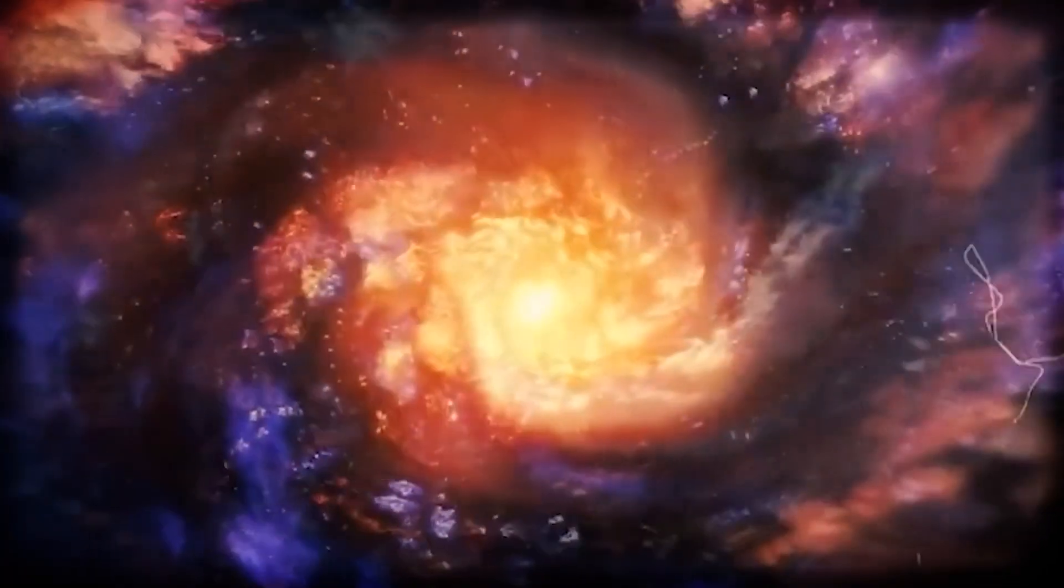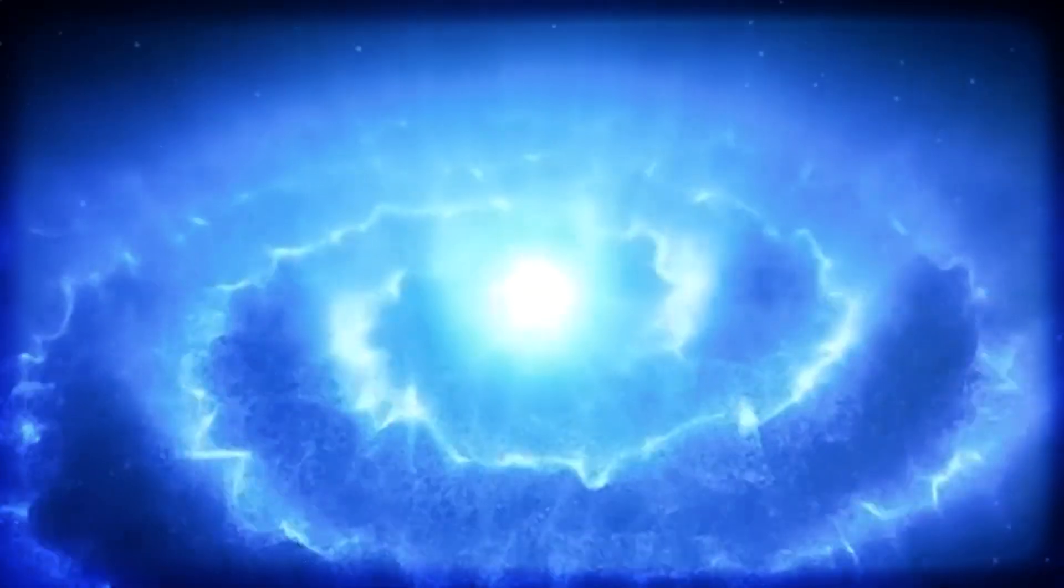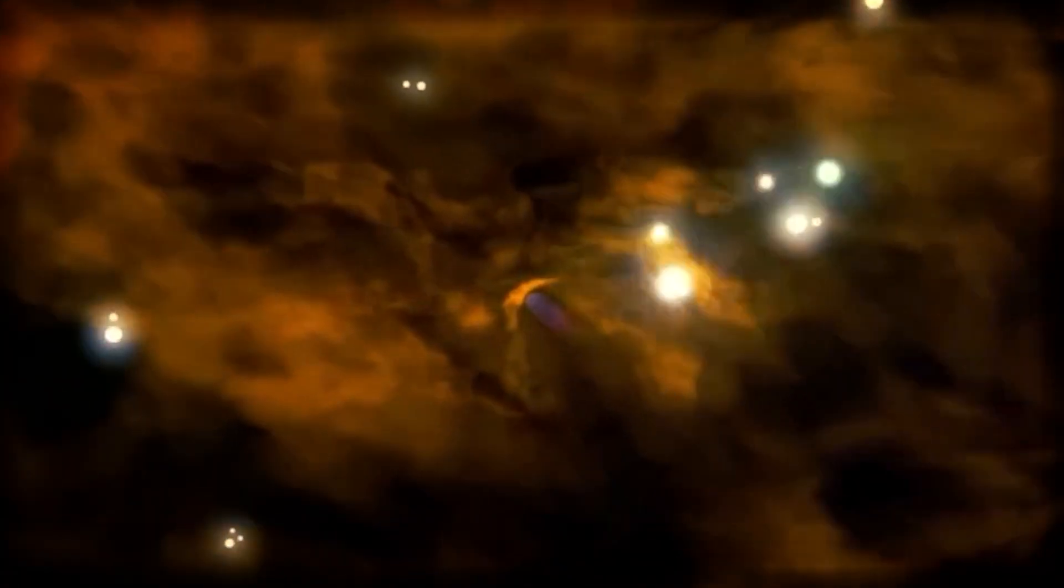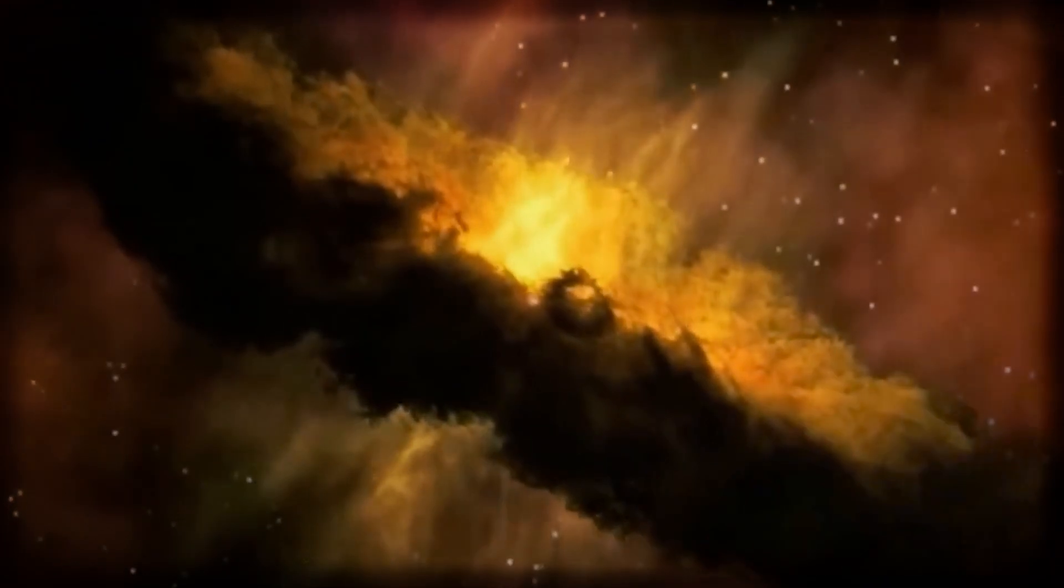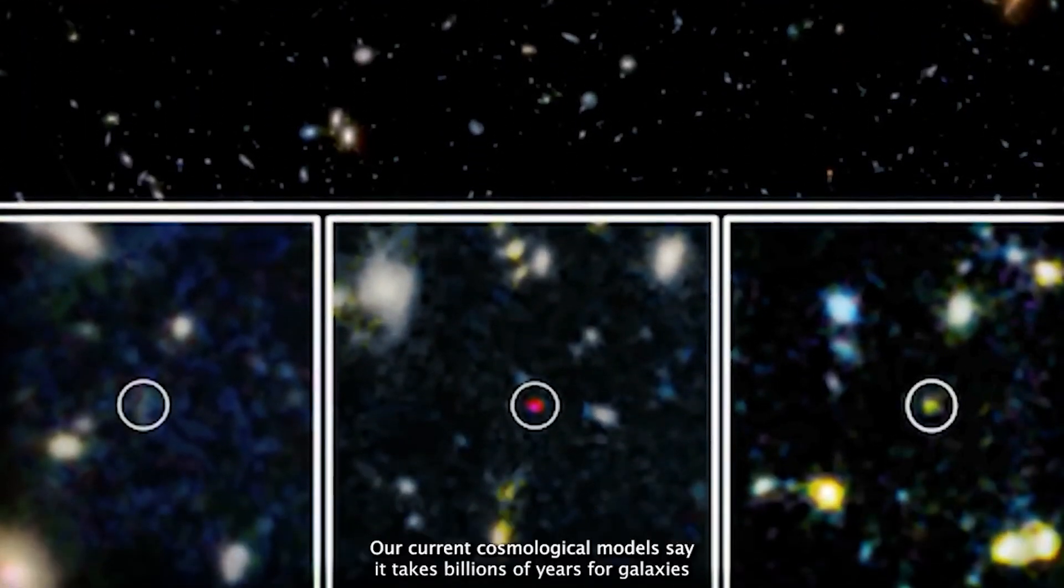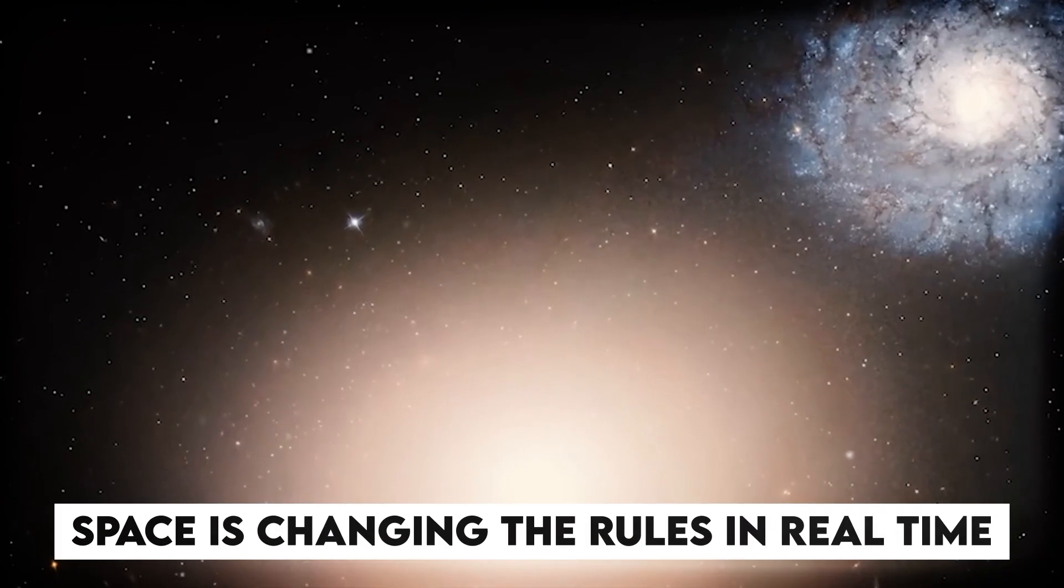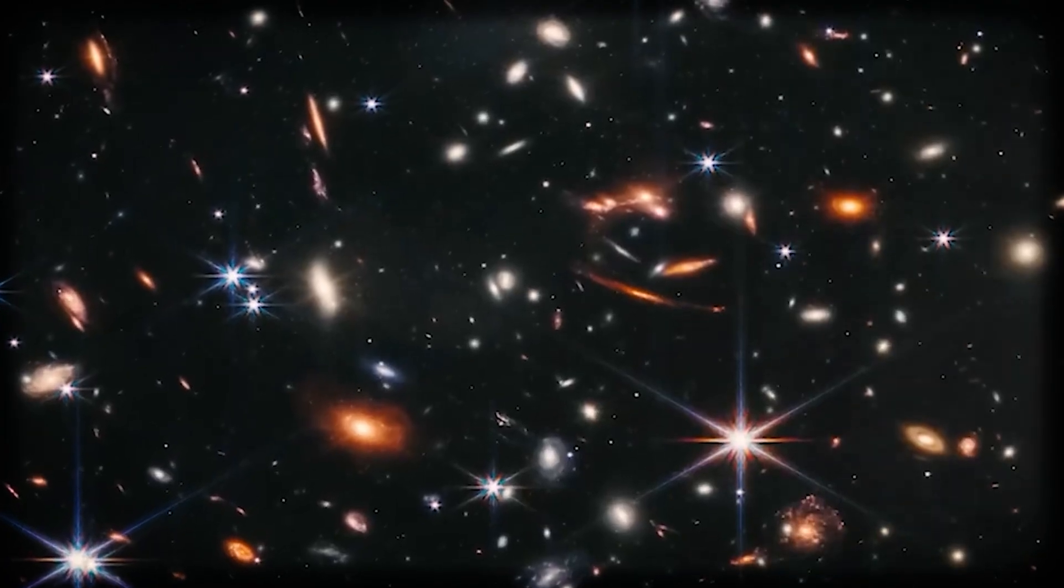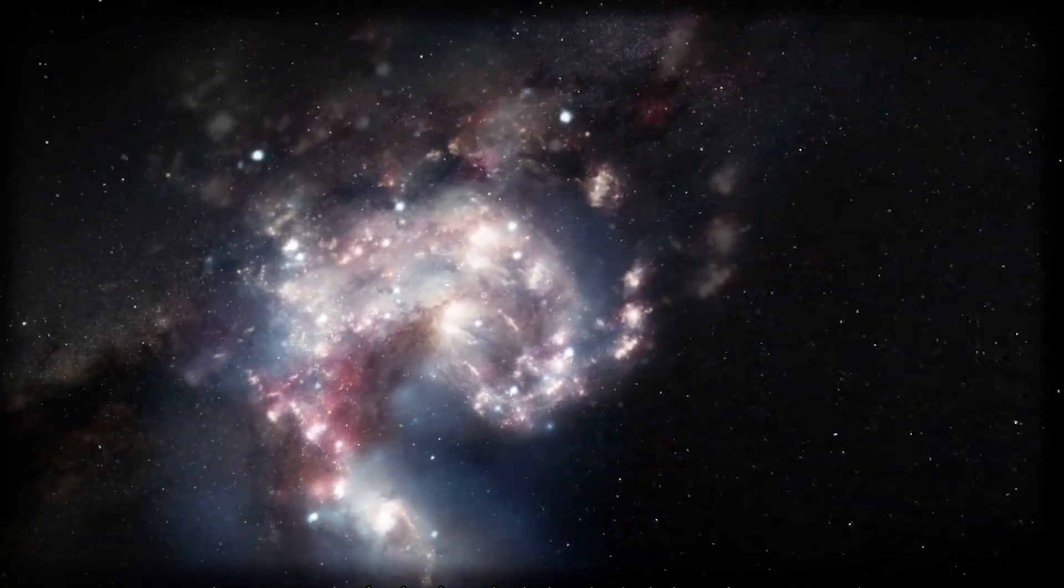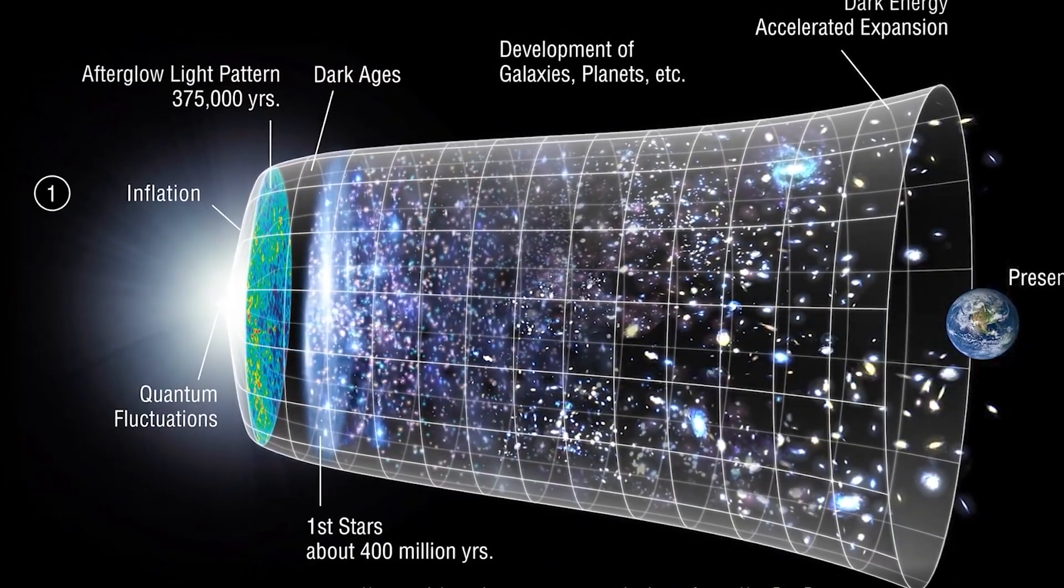Here's the twist. While those galaxies are moving away at superluminal speeds, the Hubble Sphere itself isn't fixed. It's expanding too. As the universe stretches and this boundary grows, some of those ultra-distant galaxies, once lost beyond the cosmic horizon, get pulled back into our visible range. In other words, we can see light from galaxies that, by all logic, should be forever out of reach. Why? Because space is changing the rules in real time. This means our view of the universe isn't static. It's constantly evolving. We're watching the light of things that were once invisible brought back into view because the fabric of space itself is expanding and morphing beneath our feet.